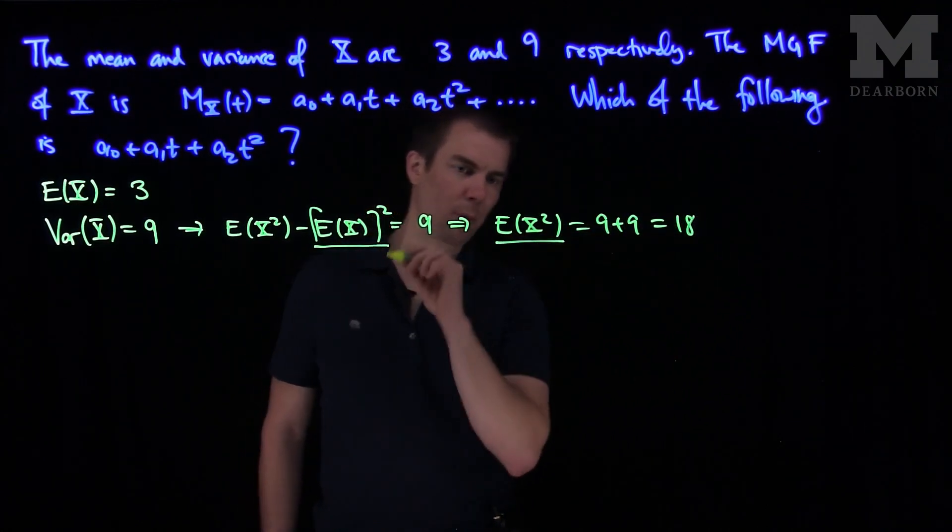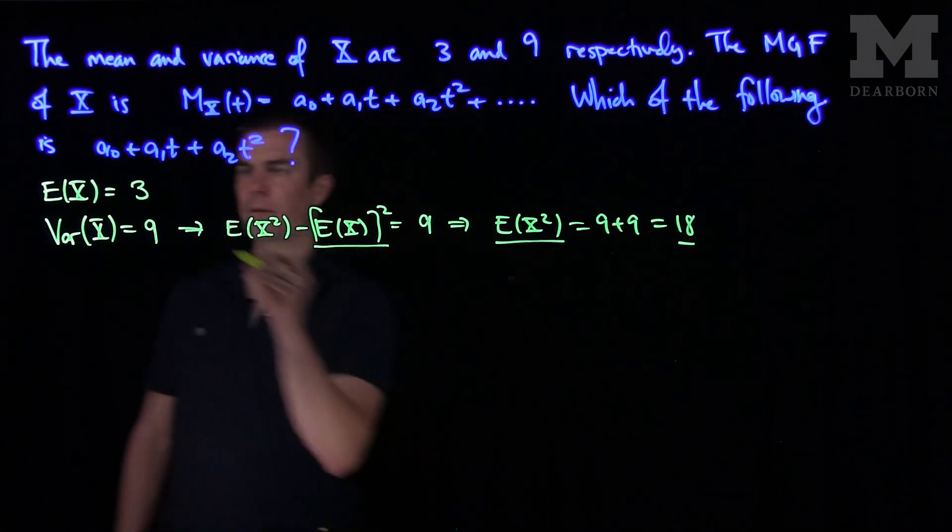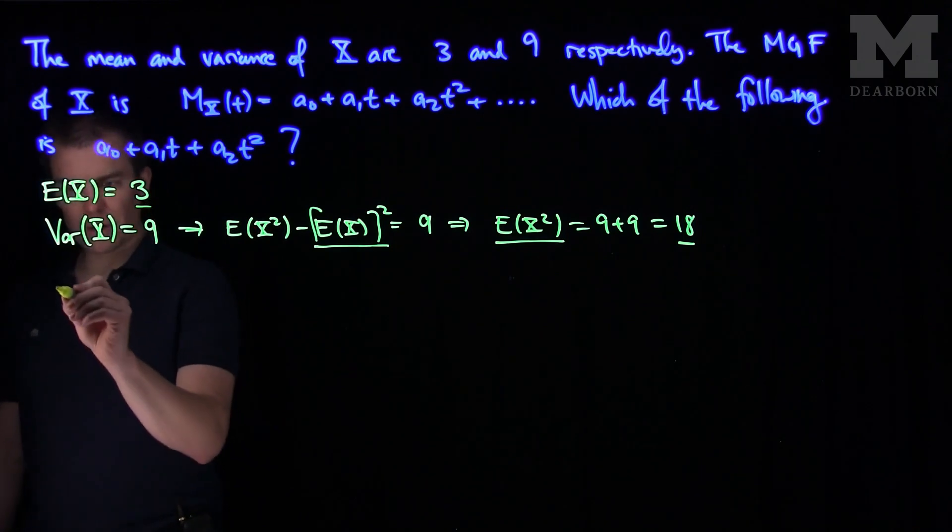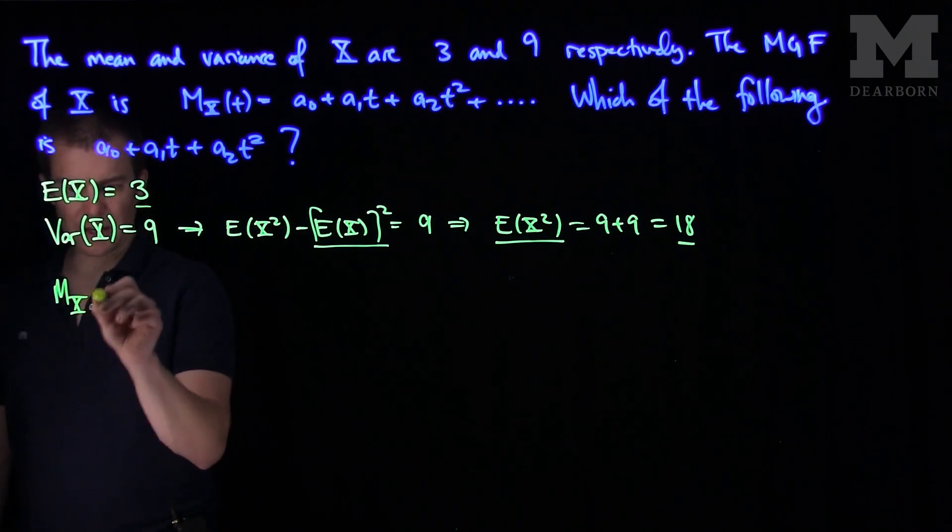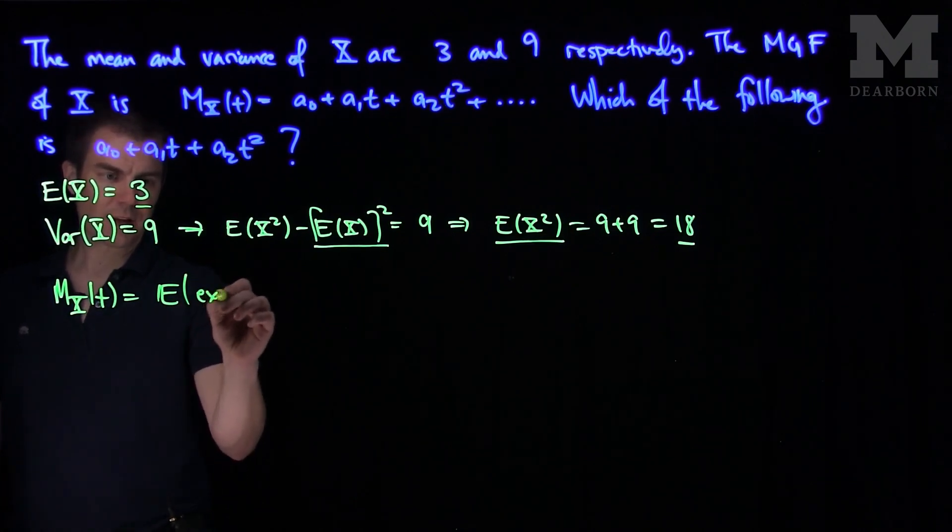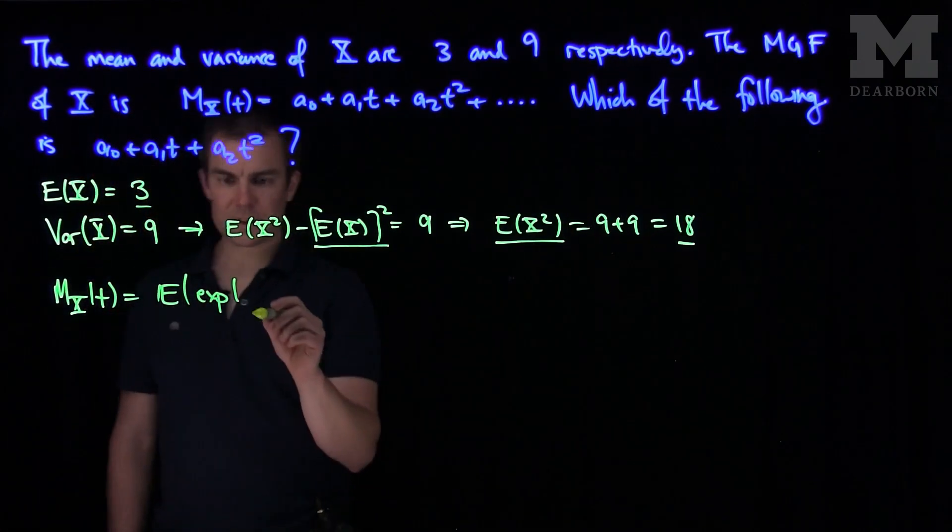So I know the second moment of X is 18. I know the first moment is 3. Now, recall that the moment generating function M_X(t) is the expected value of the exponential of tX.